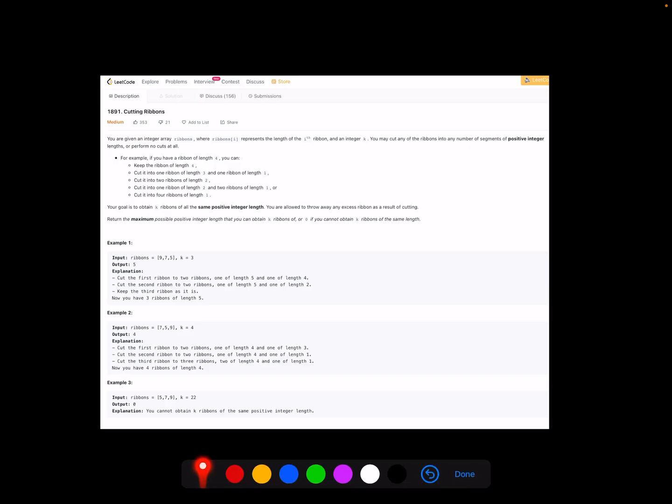So first of all, let's look at the problem. We are given a list of ribbon lengths and a k. Eventually, our goal is to obtain k ribbons of all the same positive integer lengths. Return the maximum possible positive integer. For the first example, the output should be 5, because 5 is the maximum length we can obtain for k ribbons by cutting 9 to one 5 and 7 to 5, and 5 itself is 5, so we got 3.